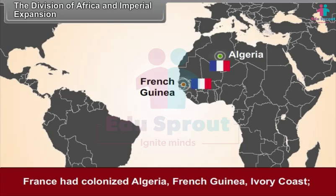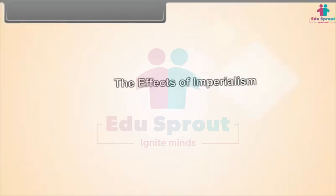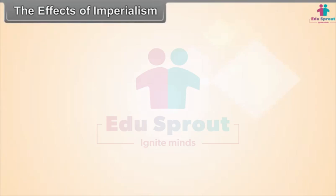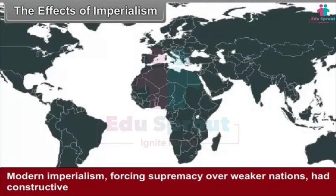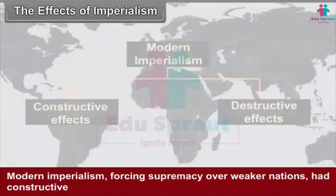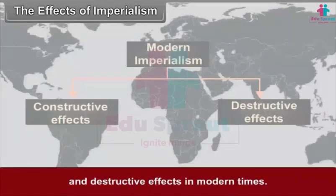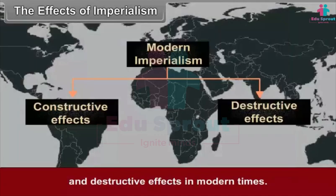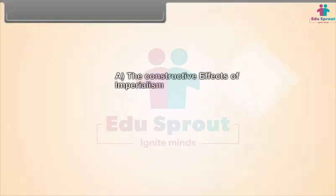England, Germany, France, Italy, Spain, Portugal and Holland had their colonies in Africa. Modern imperialism, forcing supremacy over weaker nations, had constructive and destructive effects in modern times.